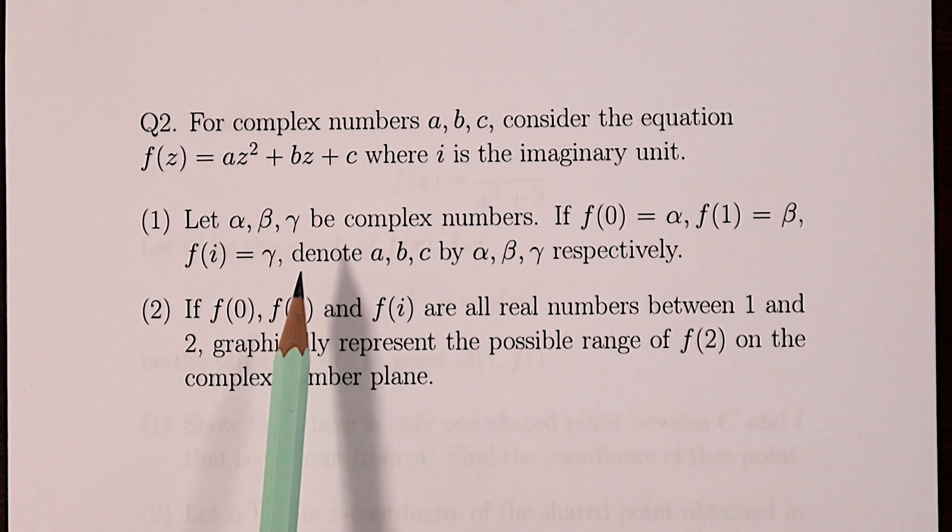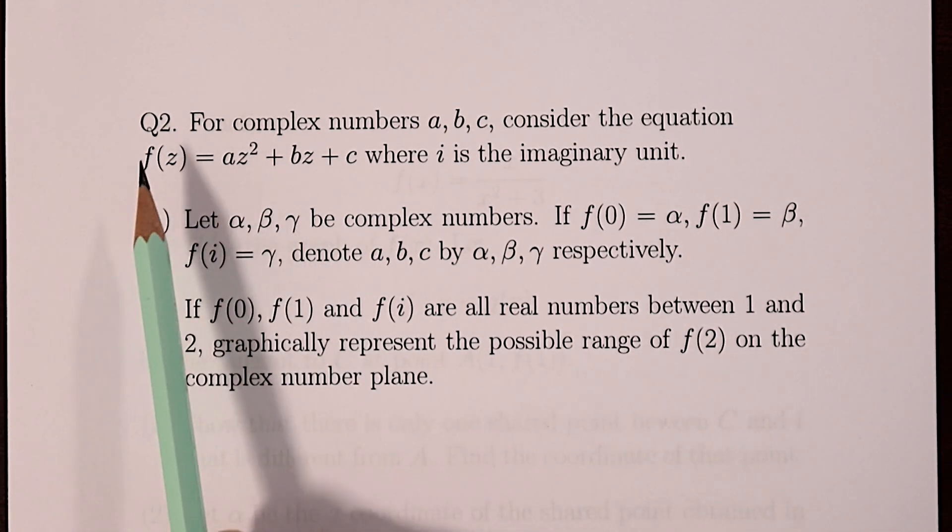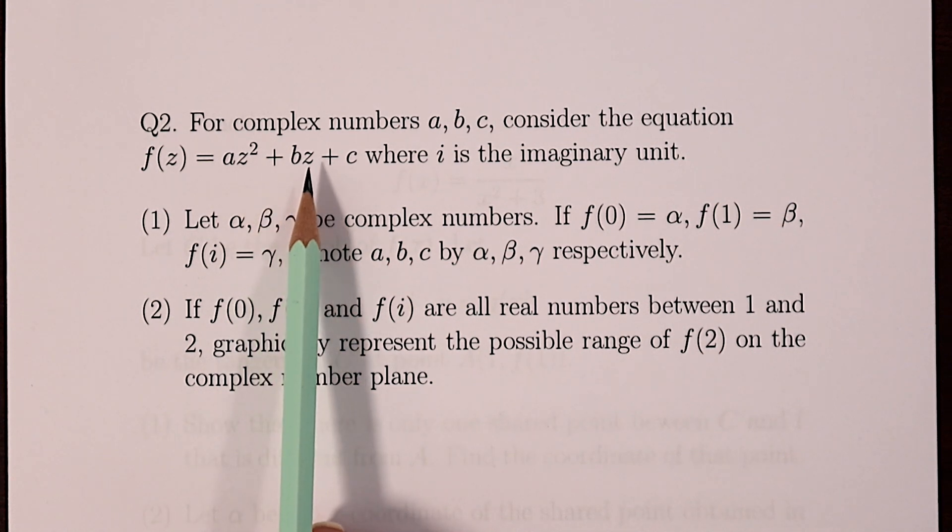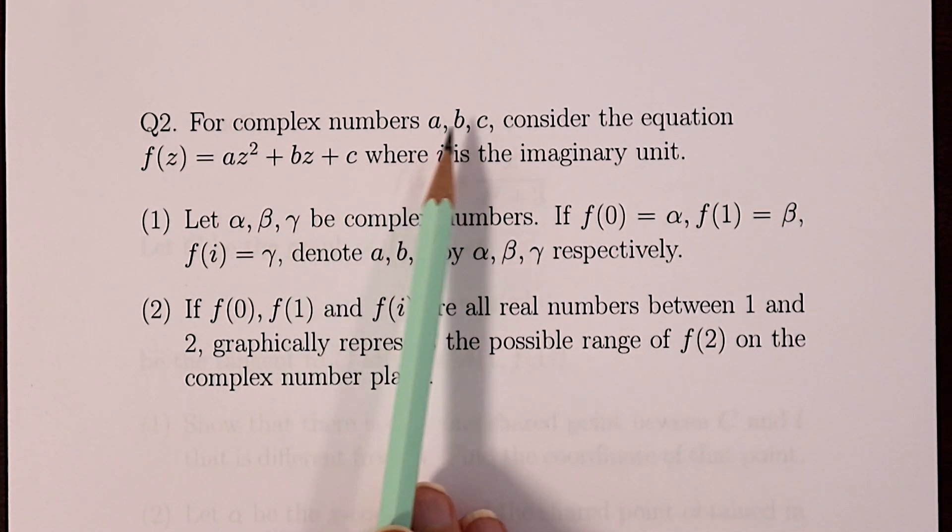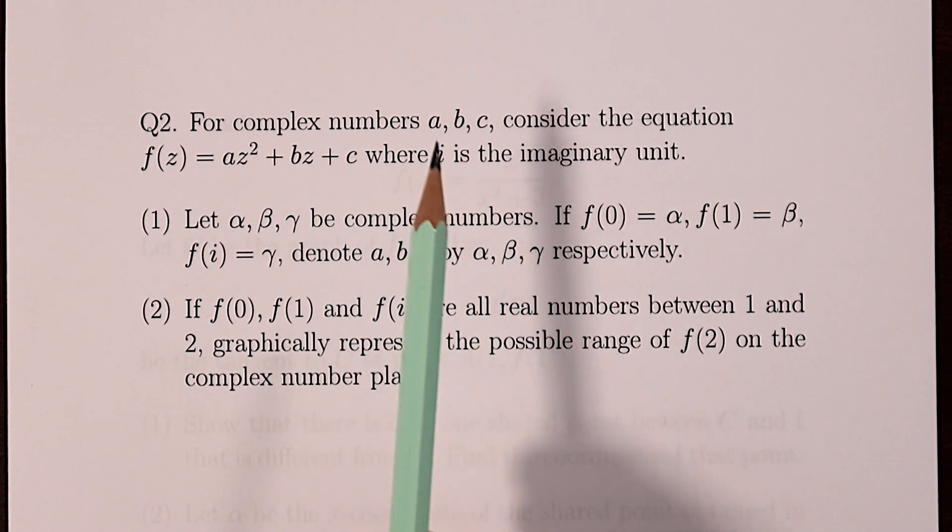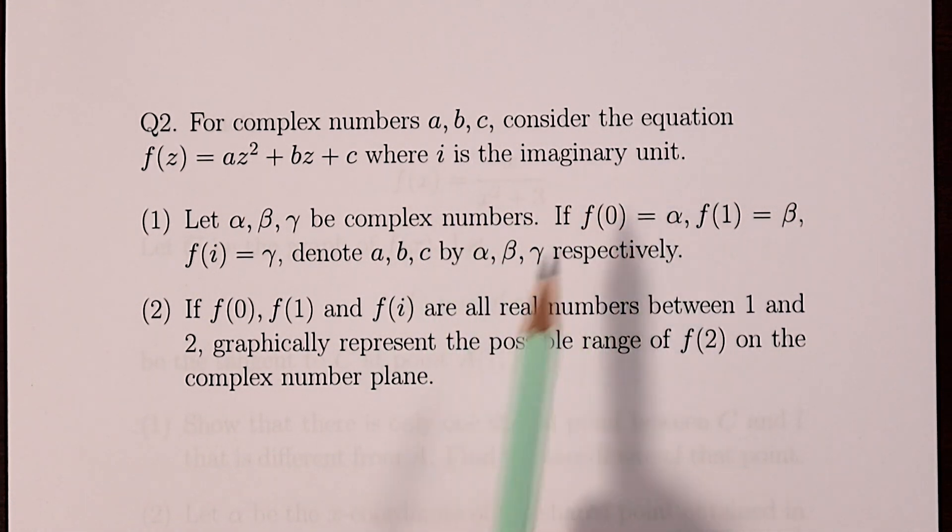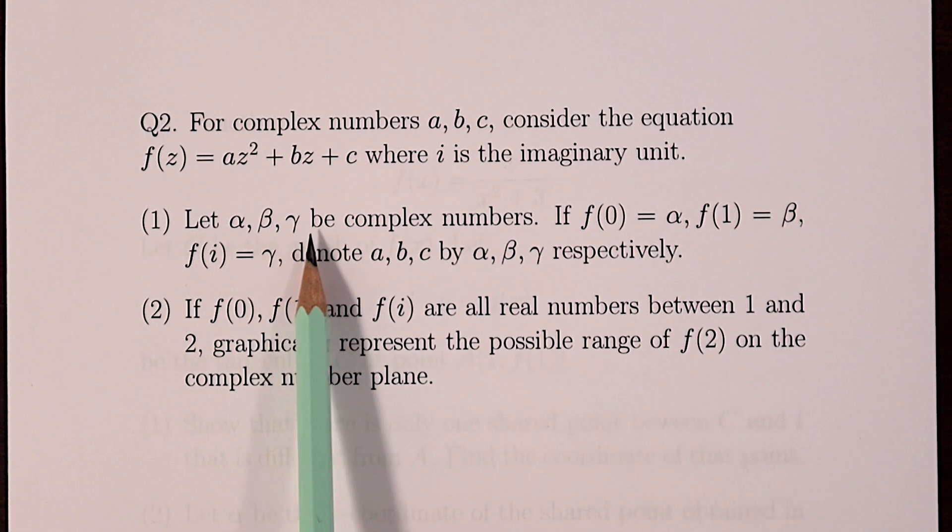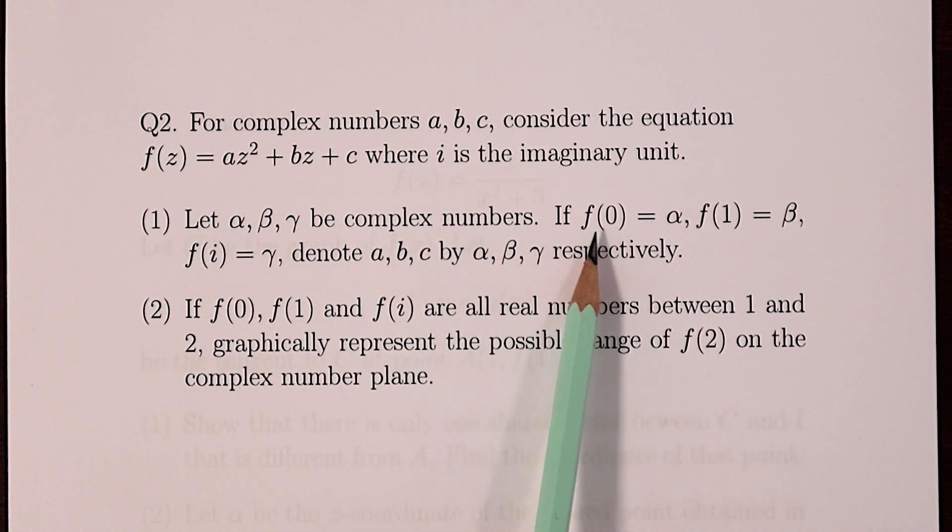In question two, it's all about complex numbers. We have this equation f(z) equals az squared plus bz plus c, where a, b, and c are complex numbers and i is the imaginary unit. For part one, let alpha, beta, and gamma be complex numbers. If f(0) is alpha, f(1) is beta, and f(i) is gamma, then denote a, b, and c by alpha, beta, and gamma respectively.